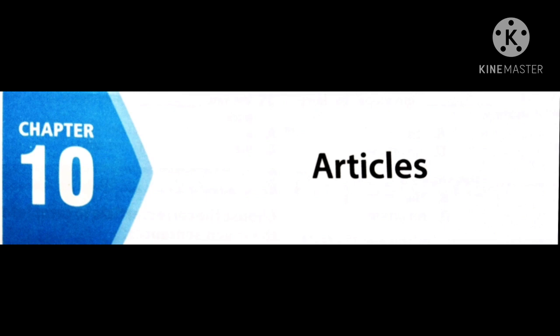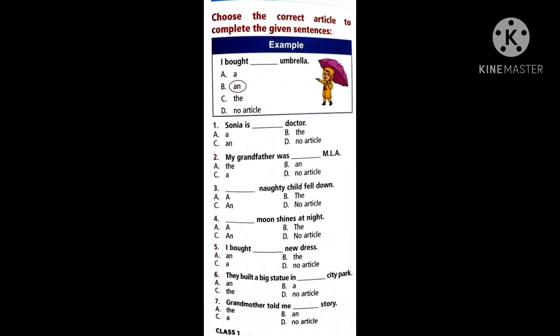So let us check the answers according to the options. Now Sonia is dash doctor. What word can we use? We said that with countable nouns starting with consonants, we use A. And which have vowel sound, we use An. So based on that, what can we use here?